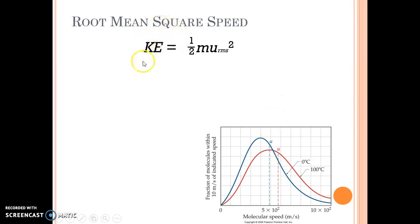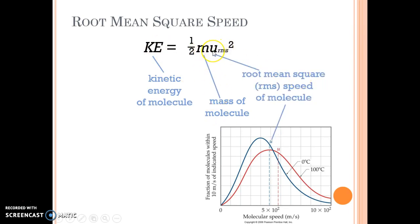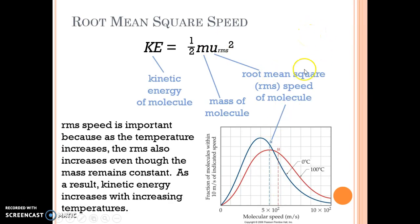So the kinetic energy is equal to one half mv squared, or in this case, the root mean square speed squared. KE is kinetic energy, m is the mass of the molecule, the u is the root mean squared speed, this speed that we're looking at.